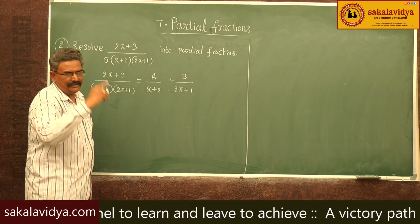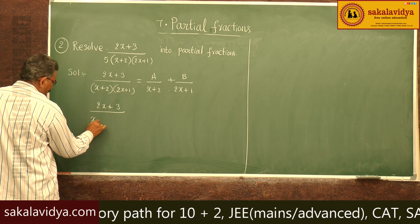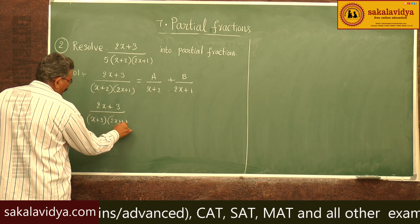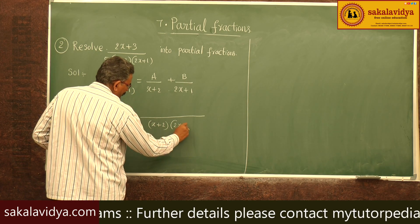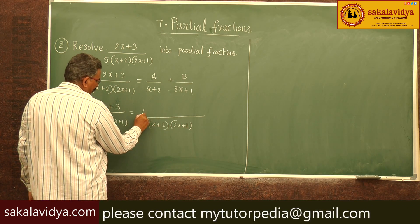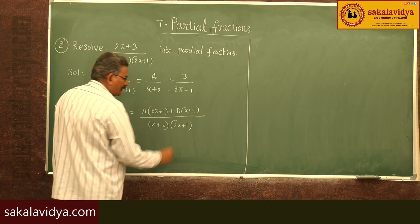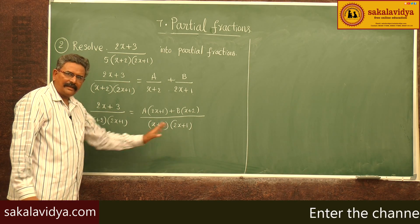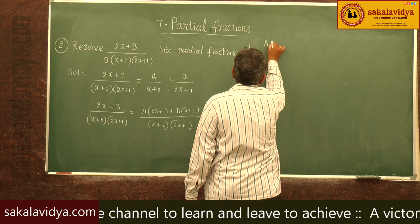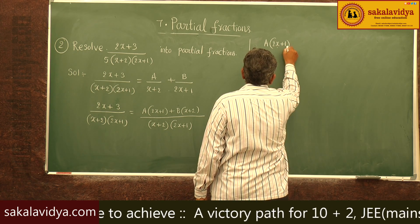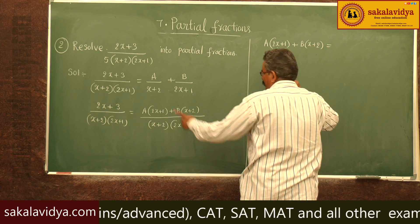These two values have to be determined. So, (2x+3) divided by (x+2) into (2x+1) — taking LCM (x+2)(2x+1), this gets cancelled, giving A multiplied by (2x+1) plus B multiplied by (x+2). Both denominators cancel, so the numerators must be equal: A(2x+1) + B(x+2) = 2x+3.